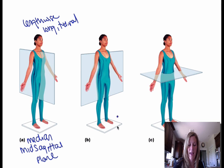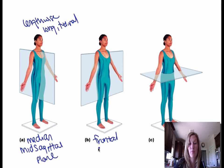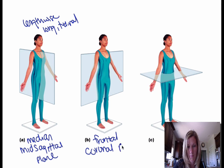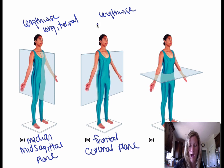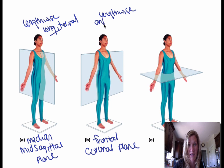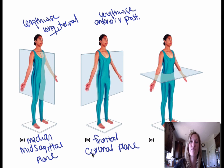Part B is a frontal plane. Sometimes this type of plane is actually called a coronal. This is where you have a lengthwise plane; however, it's going to be different from the longitudinal in that you're separating an anterior versus a posterior plane with the frontal or the coronal.